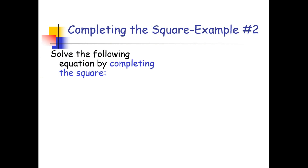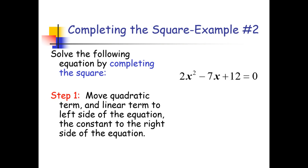Example number 2: solve 2x squared minus 7x plus 12 equals 0 by completing the square. As you can see, our quadratic term has a coefficient greater than 1. If this is the case, we need to simplify first so that our quadratic term has a coefficient of 1. We divide the whole equation by 2. Step 1 gives us 2x squared minus 7x equals negative 12.